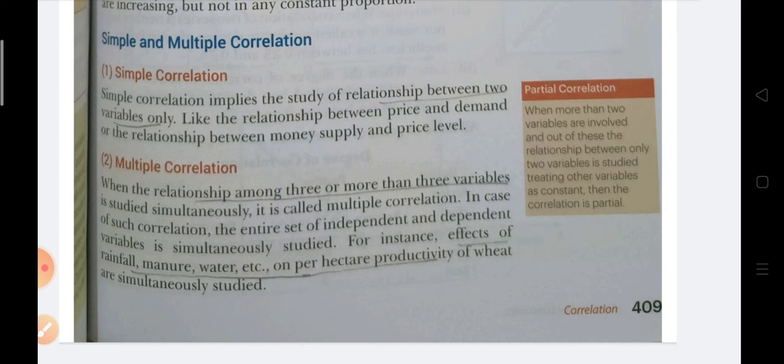Simple correlation is when we are looking at the relation between only two variables. Multiple correlation is when we find the relation among more than two series. For example, if we look at the relation between price and demand only, that is simple correlation. But if we are studying production in farming areas alongside rainfall, HYV seeds quantity, wheat, manure, water — all these series together — then it is multiple correlation.